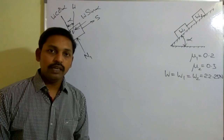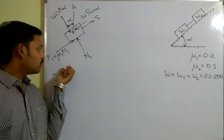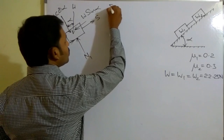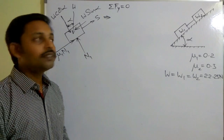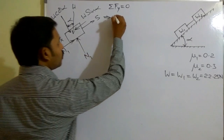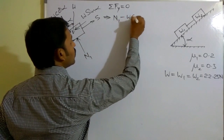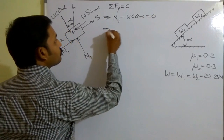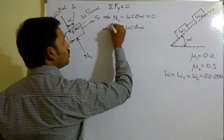Now I need to apply the equations of equilibrium: sigma Fx equals 0, and sigma Fy equals 0. When I consider sigma Fy equals 0, I can find the value of N1. So the algebraic sum of force components along the y-direction: N1 is along positive y, and W cos alpha is along negative y. Setting this equal to zero gives N1 equals W cos alpha.